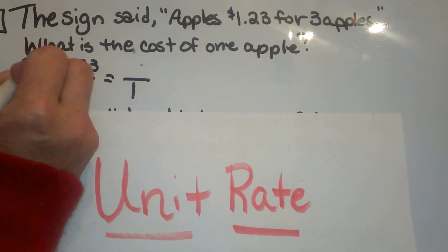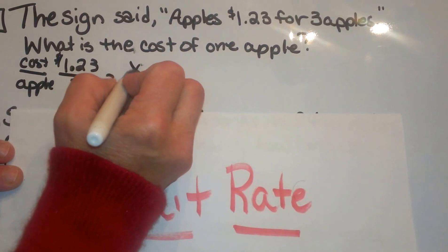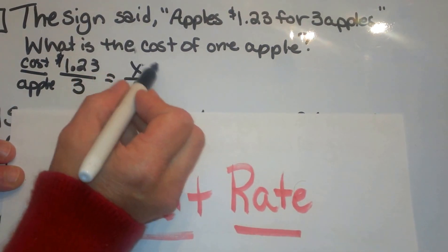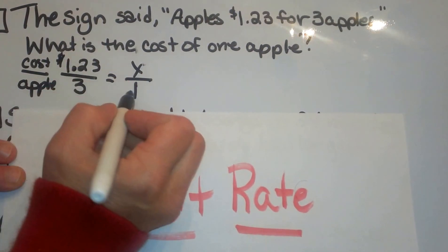And the cost on the top. So we do not know the cost of one apple. So we are going to put a variable or x up here and then we are just going to do a cross product.